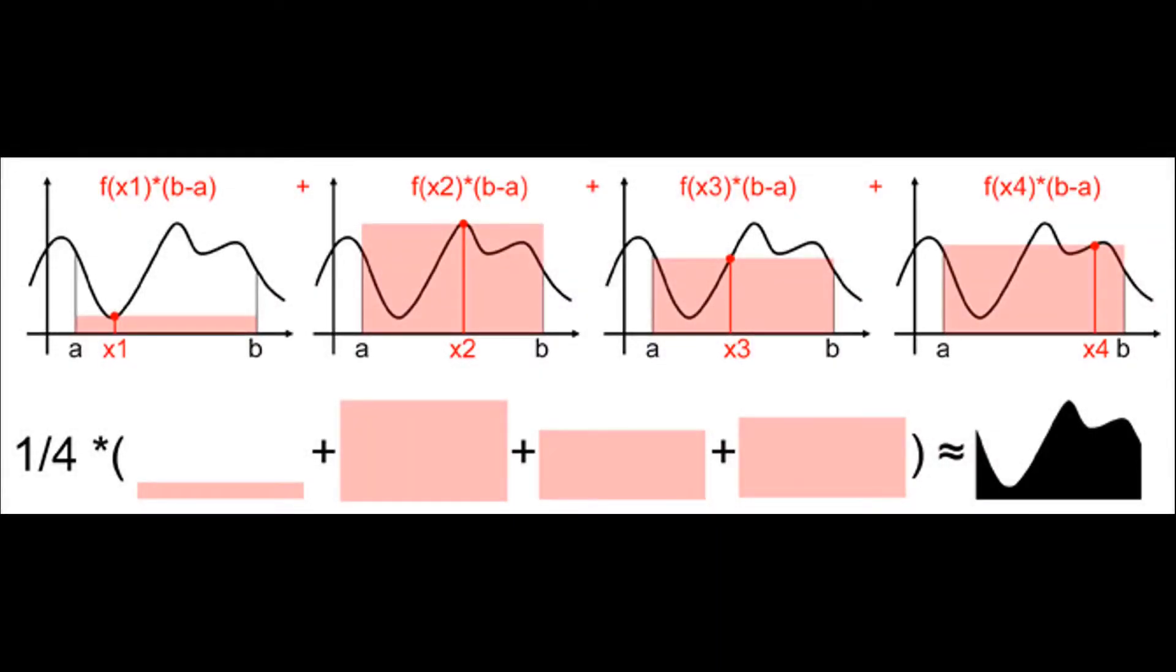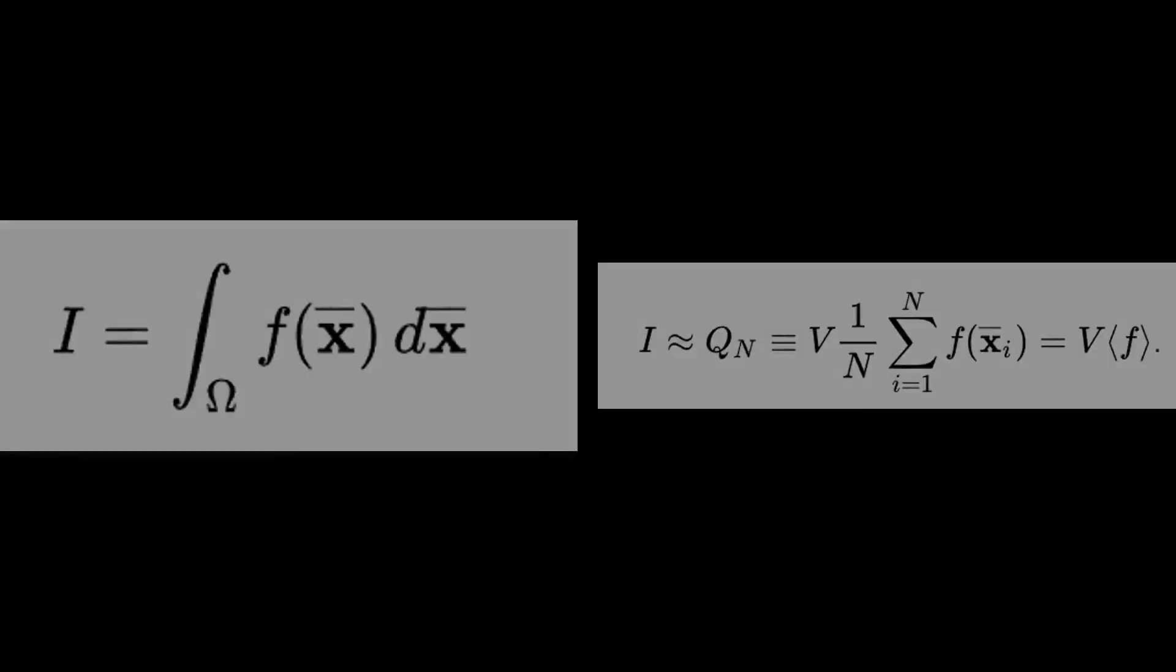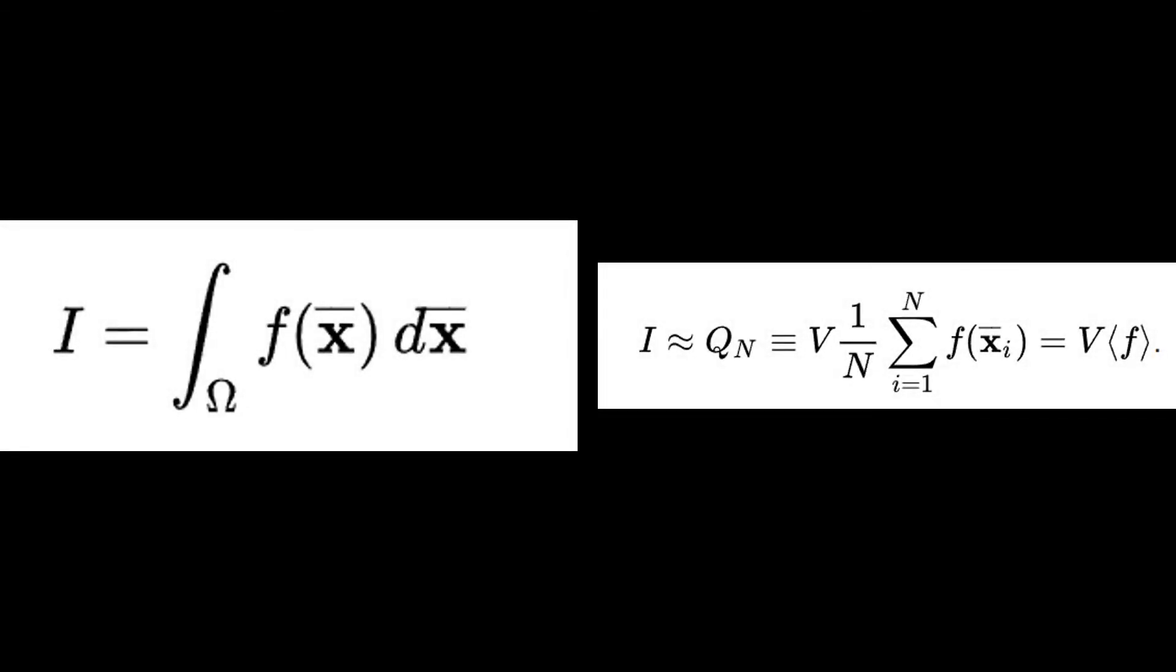Essentially, it's a kind of numerical integration using random numbers. We can approximate an integral of a function by evaluating it at many random points and taking the average. Here's what that looks like as an equation. In the equation on the right, we are approximating the integral on the left by evaluating n samples and averaging them. Now that we understand Monte Carlo integration, let's apply it to ray tracing.